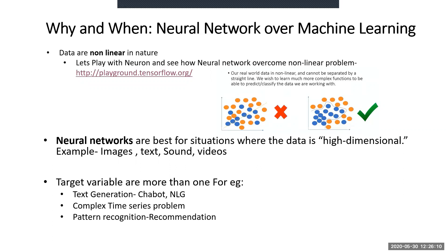Another application for neural networks is when the target variables are more than one. In machine learning classification, the target variable is typically 0/1, yes/no, or good/bad. However, if you have multiple outputs — for example, in a chatbot text generation, when you say 'hi,' the chatbot generates 'hi, how are you?' — the target is a multiple sequence of data. In such scenarios, we need to use neural networks.